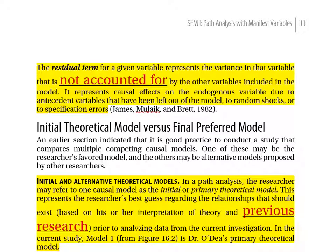This is Part Three of the Psych 400 course pack, Chapter 16: Path Analysis. Chapter 16 is SEM 1 — path analysis with manifest variables. We're now on Part Three, which begins on page 11, with the section headed 'Initial Theoretical Model versus Final Preferred Model.'